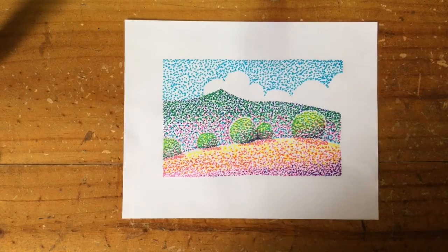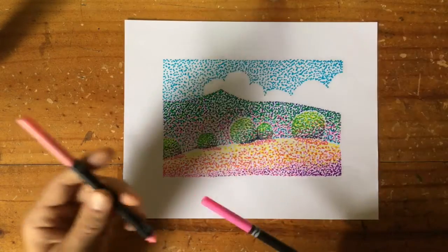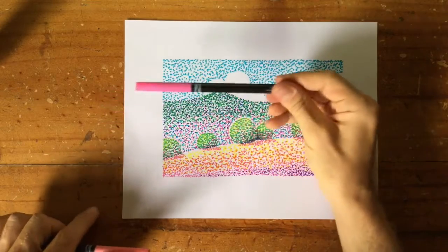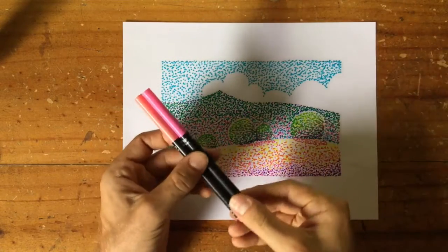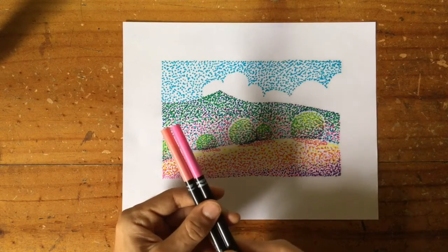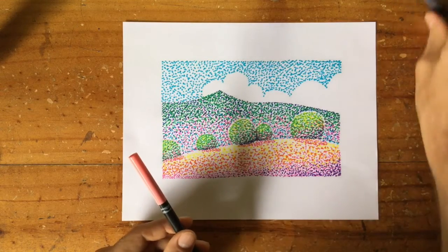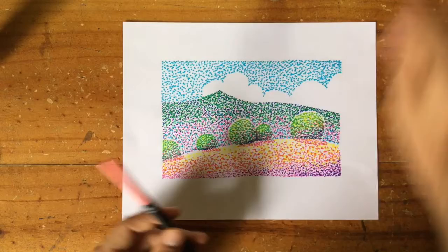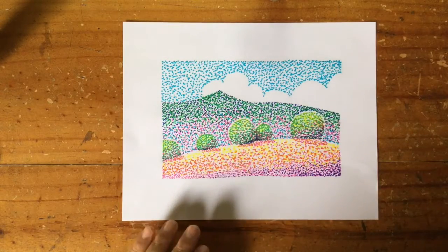The next color we'll add is pink. I have a slightly different pink to the one I used before. So here's the one I've been using in the rest of the picture. And here's the new pink that I'm going to use for the sky. So yeah, you can see comparing them they're quite different. It doesn't matter if you don't have a different pink.